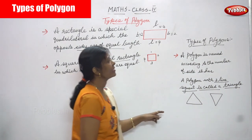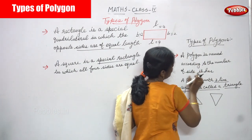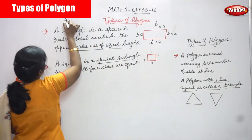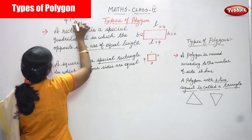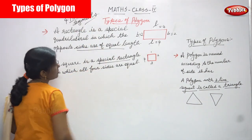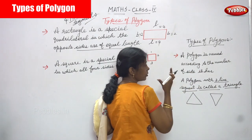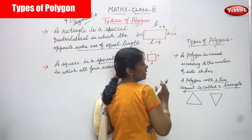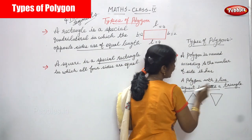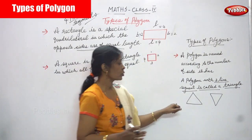Let me repeat once again: types of polygons. A polygon is named according to the number of sides it has — the number of line segments. We can divide and allocate the types of polygons accordingly. A polygon with three line segments is called a triangle — it has three sides. Three line segments give us a triangle.